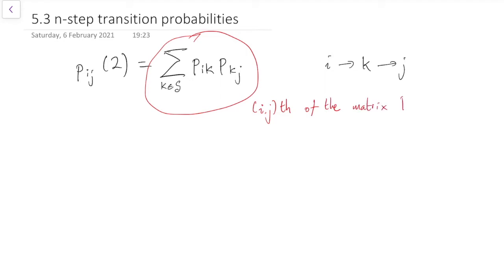Now, let's think about that for a moment. So remember that we said that we could write all the transition probabilities, Pij, into a matrix P.